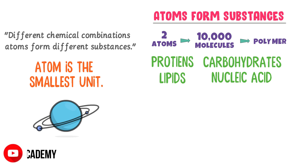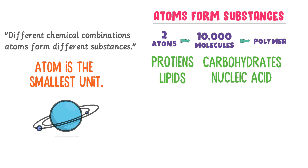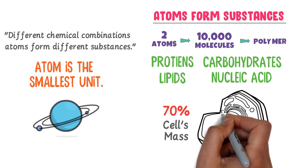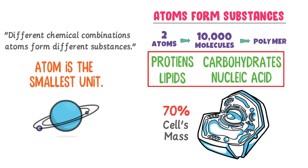These polymers are also known as macromolecules. Thus proteins, carbohydrates, lipids, and nucleic acids are polymers and they are all made up of atoms. Aside from water, 70% of a cell's mass is composed of macromolecules like proteins, carbohydrates, lipids, and nucleic acids.